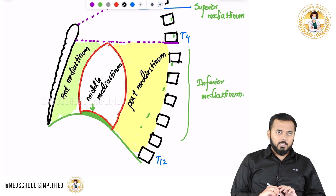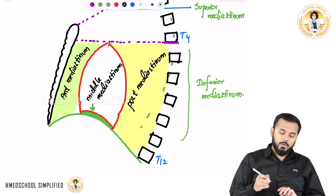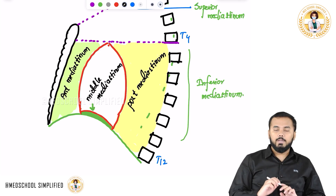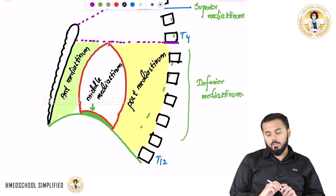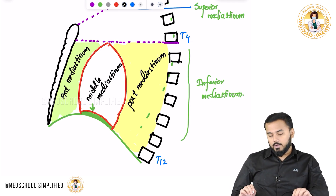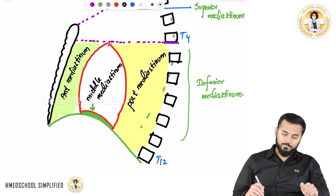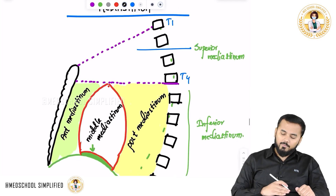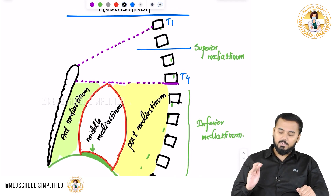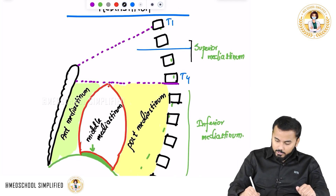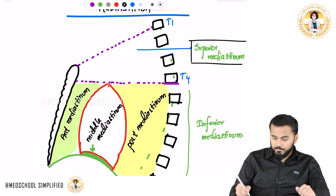One very important thing to remember: the heart is exactly located in the middle mediastinum. Now, after discussing the inferior mediastinum, let us discuss the superior mediastinum.